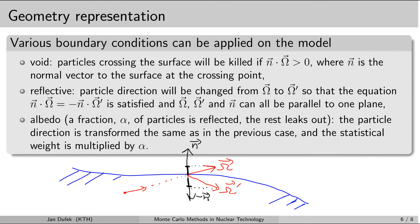We can also define albedo boundary conditions, which means that only a fraction of the particles is reflected back into the system and the rest leaks out. We need to specify the fraction alpha for the particles which are reflected back. In analog Monte Carlo simulations we only have to decide whether the particle is reflected or not based on this probability. In non-analog simulations the history is simulated differently and we simply adjust the statistical weight, but we will learn about this later.